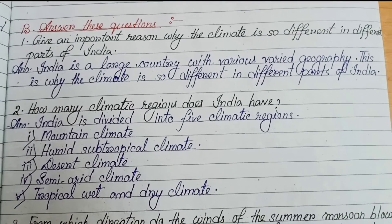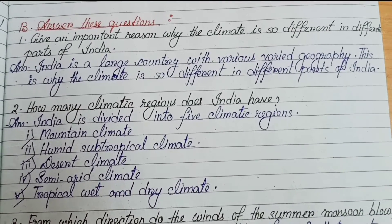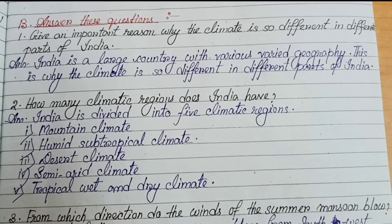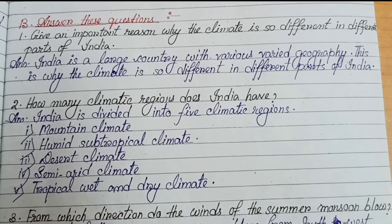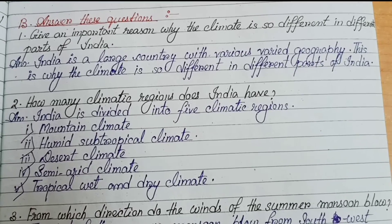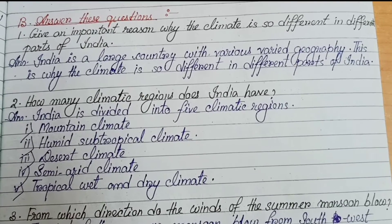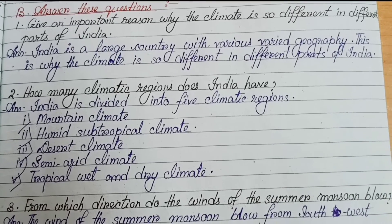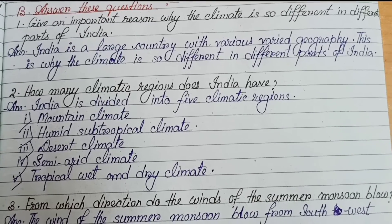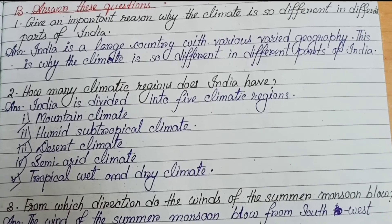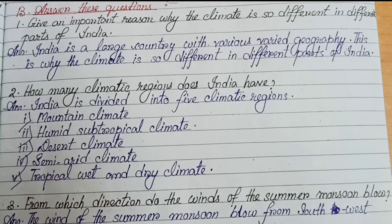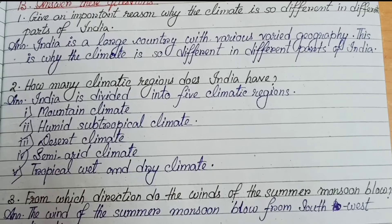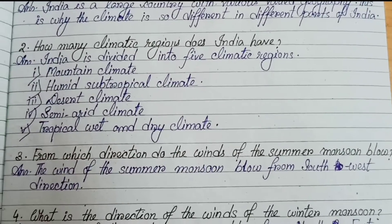Number 2: how many climatic regions does India have? India is divided into five climatic regions. Number 1: mountain climate. Number 2: humid subtropical climate. Number 3: desert climate. Number 4: semi-arid climate. Number 5: tropical wet and dry climate.